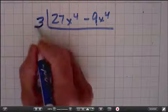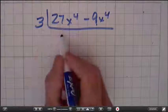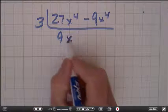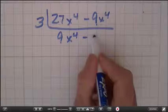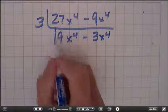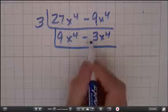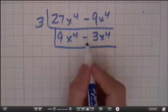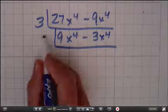27 divided by 3 is 9x to the 4th minus 9 divided by 3 is 3x to the 4th. And now I'm going to look at 9 and 3 and ask myself, is there a factor that 9 and 3 have in common? And indeed there is, it's 3.